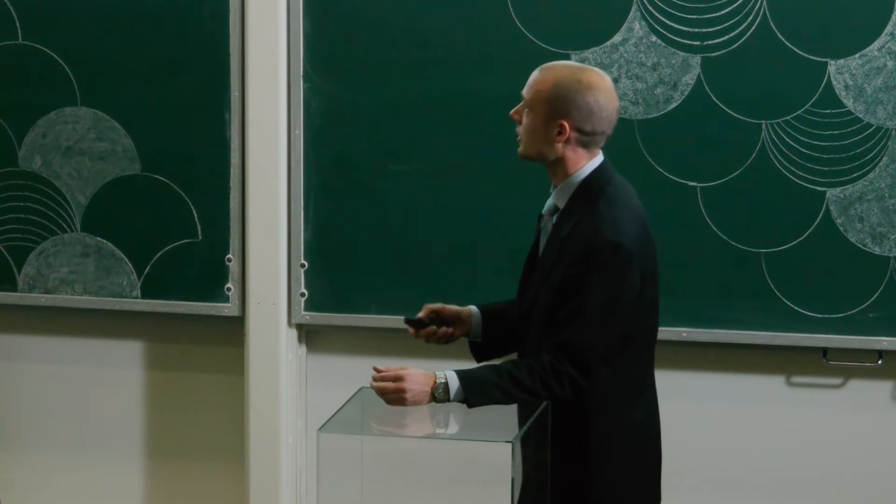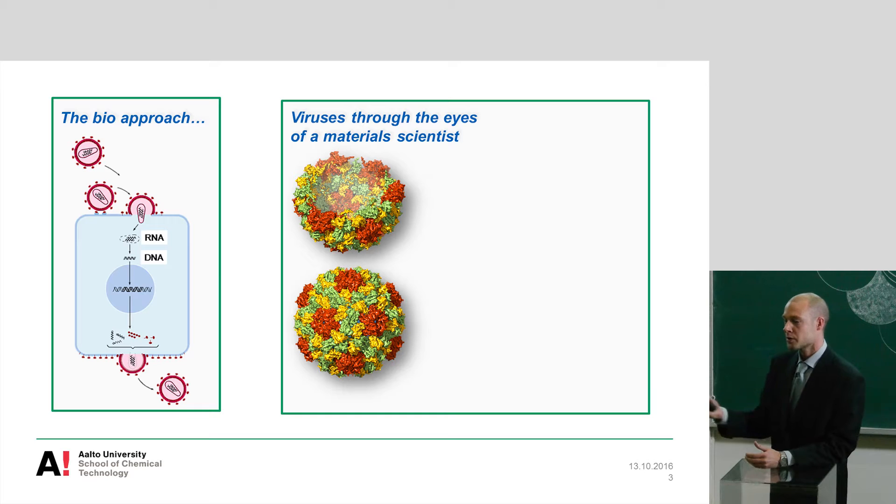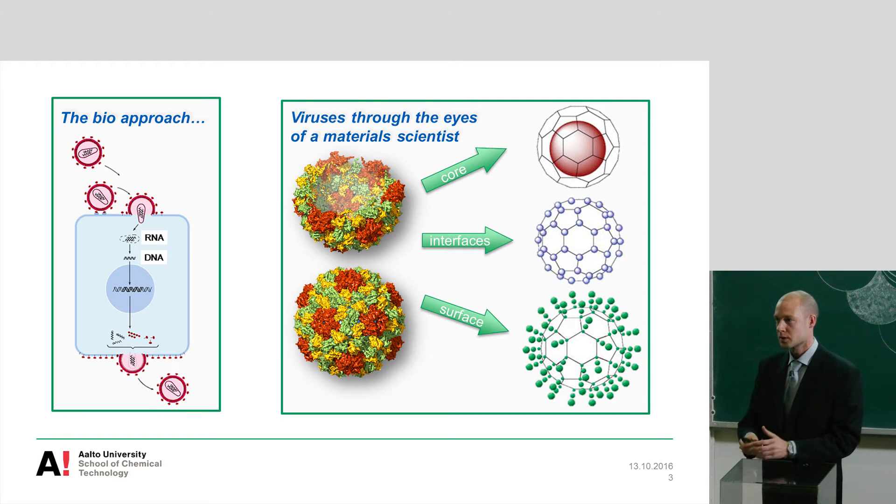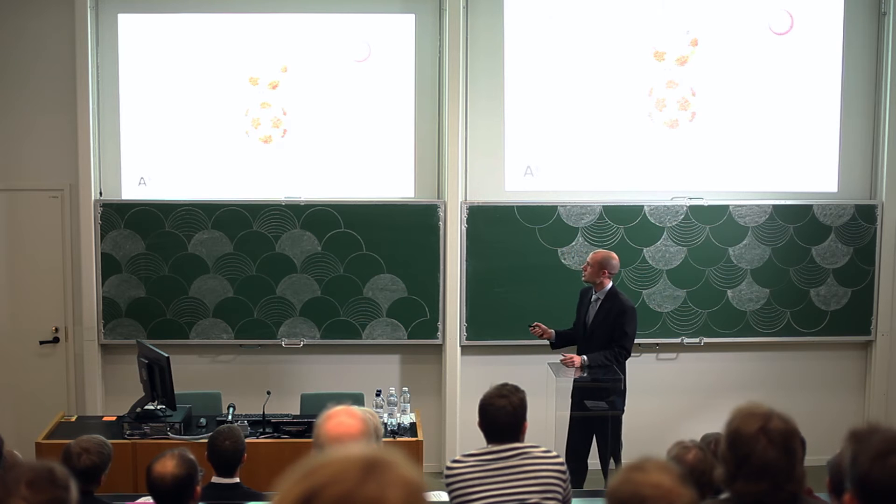But our question is a bit different. So my question is, what does a chemist or a material scientist see when you look at a virus particle? So the first impression that you get is that it's a very monodispersed system. And there's a lot of different areas in such a particle that one could modify through chemical means. So we could, for example, put something inside the virus. We could modify the junctions in between the proteins that make up this capsule. Or we could decorate the surface of this.